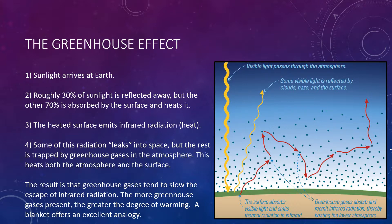All of the energy trapped by the greenhouse effect does still eventually escape into space — it's just not as directly as it would be otherwise. A blanket offers a fantastic analogy. You stay warmer under a blanket not because the blanket itself is providing any heat, but because it slows the escape of your body heat into the cooler outside air. For example, if you add more layers on top of you while you're sleeping, you're probably going to feel warmer.